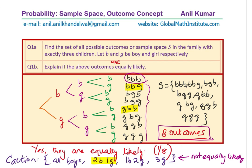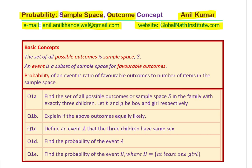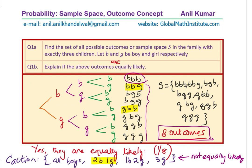I hope with this you understand the concepts: what are the possible outcomes for a given event, and how to define outcomes so that they are equally likely. Defining only four grouped outcomes would be incorrect because they are not equally likely. The correct answer is the 8 equally likely outcomes. Thanks for your time and all the best.